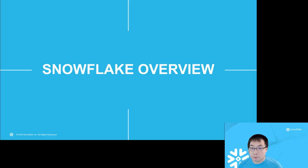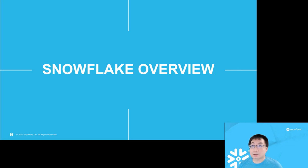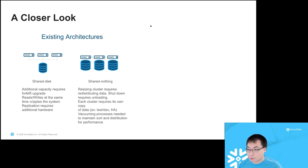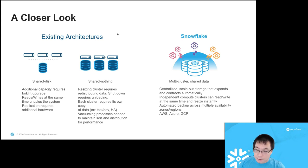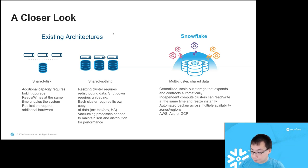Traditional OLAP databases fall into the camps of either a shared disk architecture or a shared nothing architecture. Both have lots of merits but suffer from bottlenecks such as contention for resources, not enough processing power, and not enough elasticity and scalability. Snowflake provides a solution in the cloud environment by breaking into three distinct layers — storage, compute, and cloud services — where each individual layer scales independently. Our architecture takes advantage of cloud-native characteristics like scalability and elasticity and avoids resource contention problems most often seen in on-premises traditional databases. We call this the multi-cluster shared data architecture.